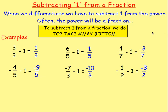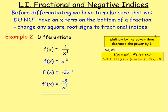A lot of the time in differentiation you will have to subtract 1 from a fractional index, and there's a quick way of doing that. If you have 3 over 2 minus 1, you do 3 take away 2, which gives 1, and then you're working with halves. If you have negative 4 fifths, take the negative with the 4 — so you do negative 4 take 5, which is negative 9, and keep it as fifths. That is a quick way of subtracting 1 from a fraction.